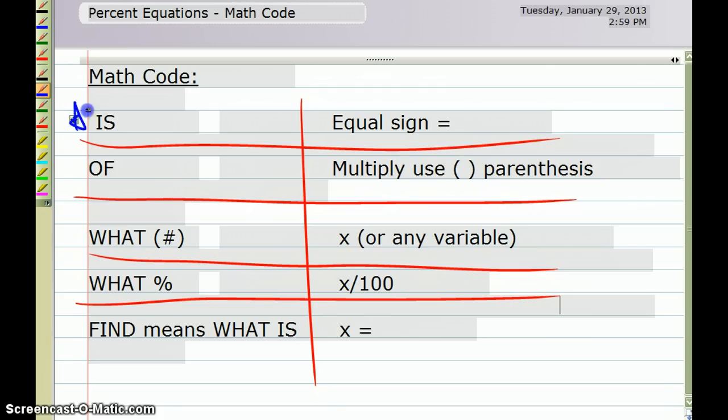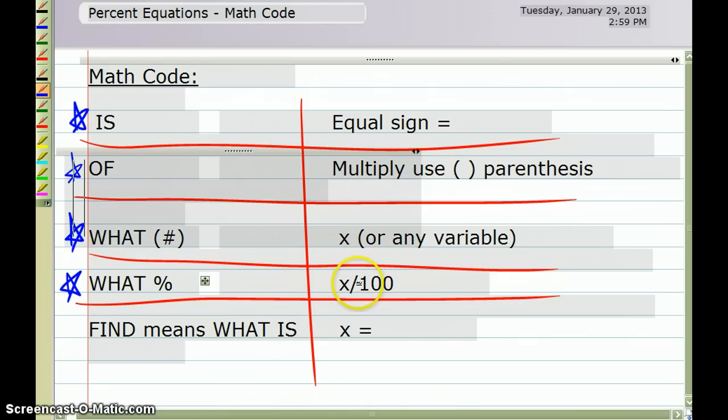So here you'll see the word 'is' reflecting an equal sign. If you see the word 'of,' that reflects the use of a parenthesis. And the word 'what number,' we would use an x or a variable. If you see 'what percent,' then you'd use x over 100, that fraction representing a percent. And then if you see the word 'find,' then what you'll want to use is that really means 'what is.' So you'll use an x and an equal.